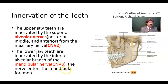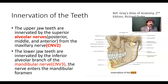The inferior alveolar nerve enters the mandibular foramen, then continues through the mandibular canal. At the mental foramen, we get the mental artery, mental nerve, and mental vein. This is the chin area.